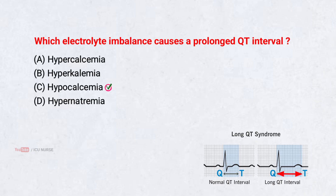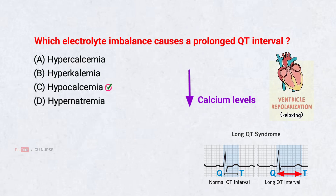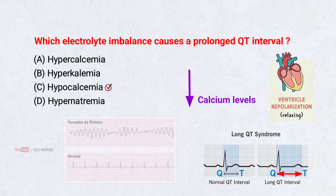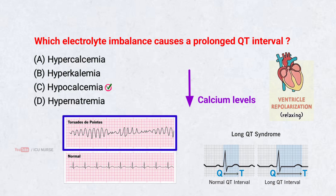Hypocalcemia — low calcium levels slow down ventricular repolarization, leading to a prolonged QT interval. This can increase the risk of torsades de pointes, making prompt identification important.